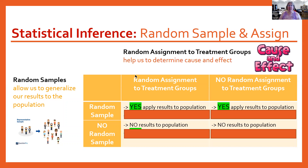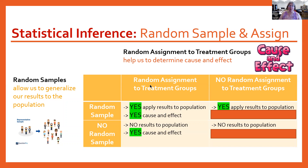A random assignment to treatment groups — taking your sample and randomly counting them off and assigning them to the various treatments — is what's going to give you cause and effect. So if you randomly assign your subjects to treatment groups, yes, you have cause and effect.